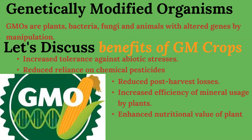The green revolution succeeded in tripling the food supply, but was not enough to feed the growing human population. So a possible solution arose: the use of genetically modified crops, or GM crops. GMOs are genetically modified organisms — plants, bacteria, fungi, and animals with altered genes by manipulation. GMOs are made superior through this process.